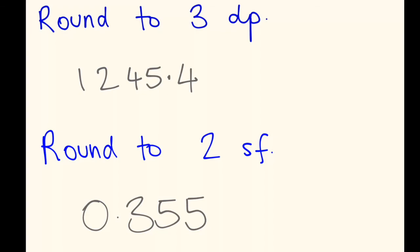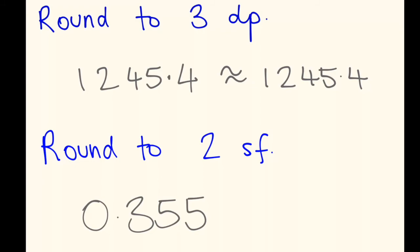So you might get questions such as these two. Round to three decimal places. And you might be given a number like 1245.4. So first thing you might notice is that I only have one decimal place in this number — that's the four after the decimal point. So if you're asked to round to three decimal places and you're only given one decimal place, you need to add some numbers on to that.